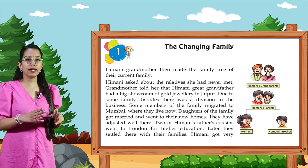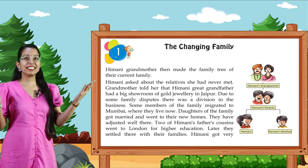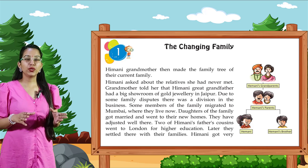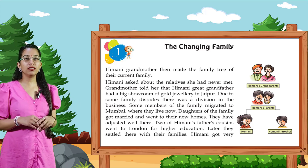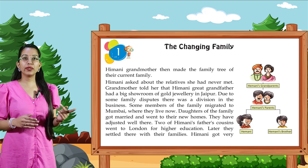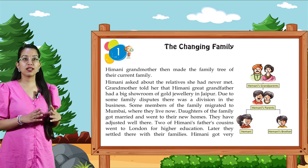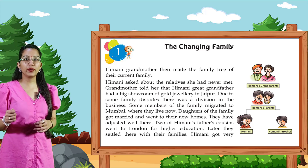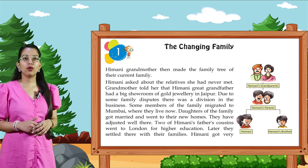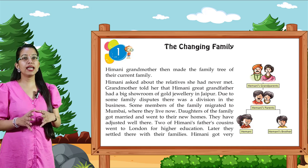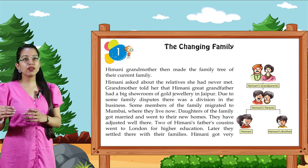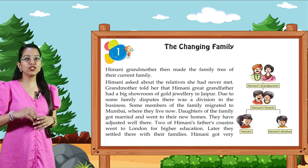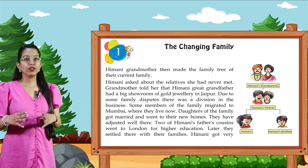Himani's grandmother then made the family tree of their current family. Himani asked about the relatives she had never met. Grandmother told her that Himani's great-grandfather had a big showroom of gold jewelry in Jaipur. Due to some family disputes, there was a division in the business. Some members of the family migrated to Mumbai, where they live now. Daughters of the family got married and went to their new homes. They have adjusted well there. Two of Himani's father's cousins went to London for higher education and later settled there with their families.